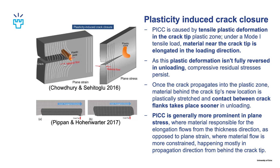Because of this more constrained material flow, the plastic wake that forms in plane strain is smaller than the one that forms in plane stress, and this will lead to plasticity induced crack closure being less prominent in plane strain and much more local.